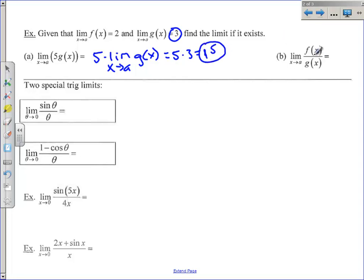The second one, part b, is simply the quotient rule for limits. You can take the limit of the top and the limit of the bottom and then divide them. As x approaches a of f, we know that's 2. And as x approaches a of g is 3, and that's 2 thirds. It's fairly easy and straightforward. So that would be the limit there.